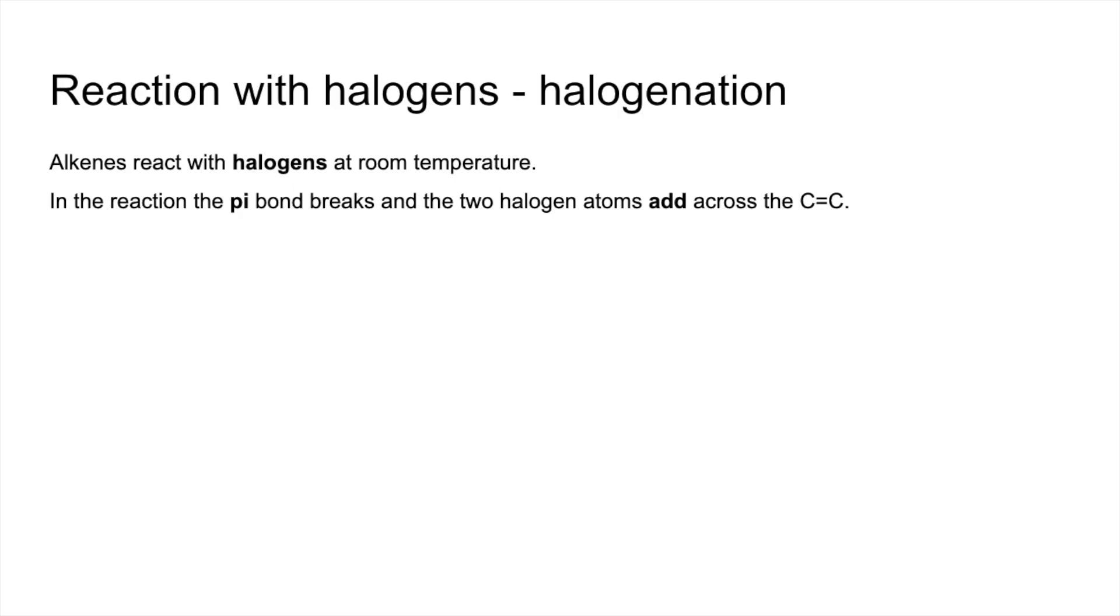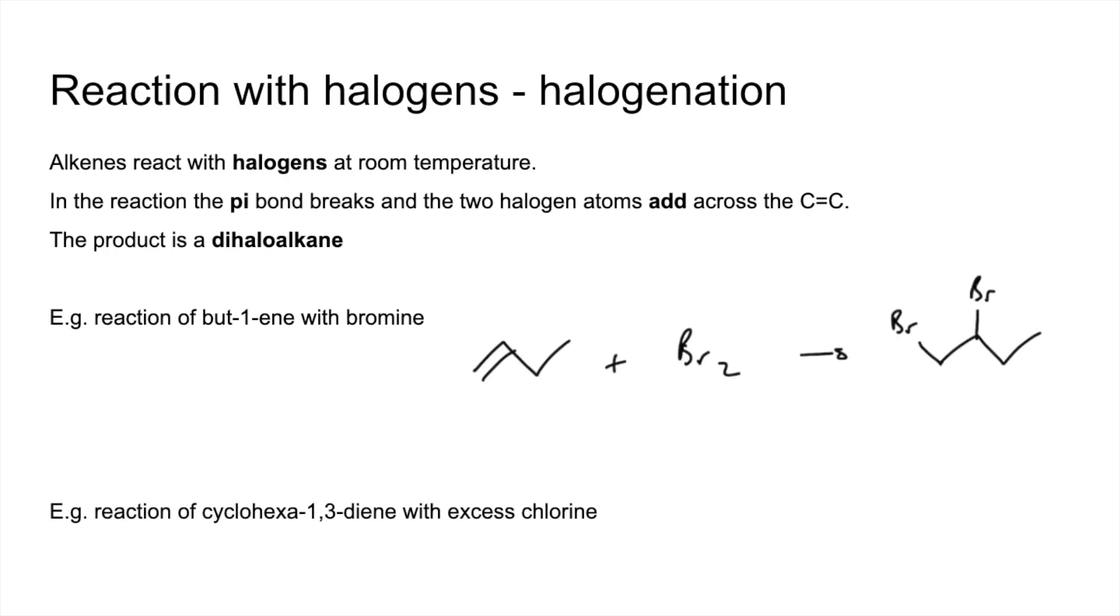And again, the pi bond breaks, and the two halogen atoms add across the C=C double bond. And the product now is a dihaloalkane. So there's your two examples to try. In the first one, we're going to get 1,2-dibromobutane.